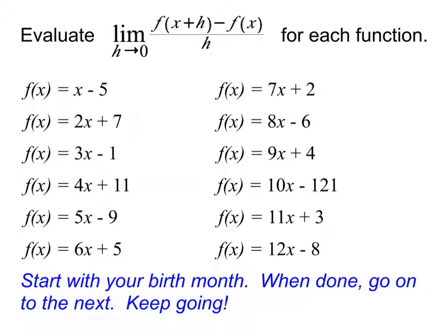Starting with your birth month — if you were born in February, you would start with the second one; if you were born in June, you'd start with the sixth. Start with the one that matches your birth month, find the value of the limit as h approaches zero of the difference quotient for that, then once you find that value go on to the next and keep going until I tell you to stop. You should be able to get through a couple of them at least, so we get lots of data points from the whole group.